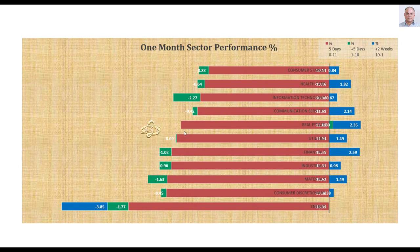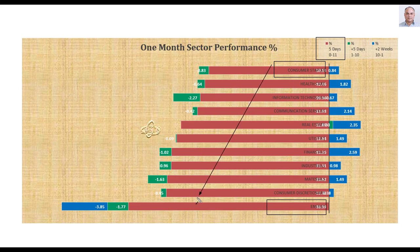One-month sector performance: the red bars represent this week's performance. All sectors went down by very high percentages, starting with consumer staples down more than 10 percent and ending with energy down by almost 17 percent. This extreme bearishness may point to an exhaustion of bears and the market may reverse next week. I showed that several ETFs bounced from support — you may watch out for a possible reversal next week.